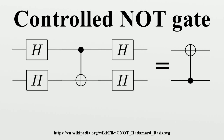Fixing the control qubit, the target output of the CNOT gate yields the result of a classical NOT gate. More generally, the inputs are allowed to be a linear superposition, and the CNOT gate transforms the quantum state accordingly.